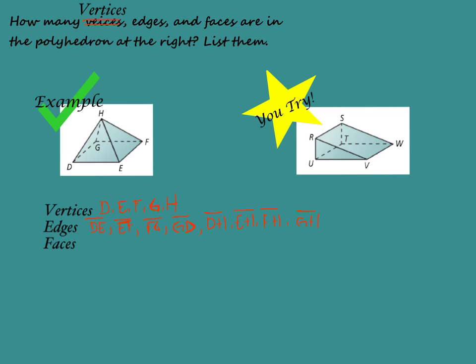For faces, each polygon is a face of the polyhedron. I have all the triangles around the top — four of them — and then the quadrilateral on the bottom. Representing those: triangle DEH, triangle EFH, triangle FGH, and triangle GDH. And then on the bottom I have the quadrilateral DEFG. I'm just writing out the word quadrilateral since I'm not positive what kind it is.